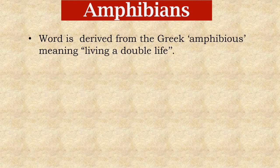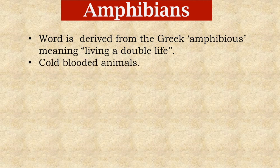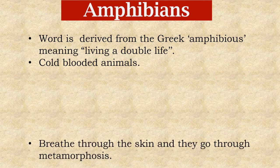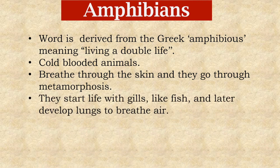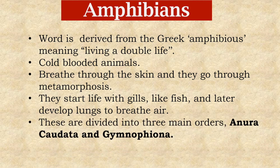The word amphibian is derived from the Greek 'amphibios' meaning 'living a double life.' These vertebrates live on both land and water. These are cold-blooded animals. Amphibians breathe through their skin and go through metamorphosis. They start their life with gills like fish and later develop lungs for breathing. Amphibians are divided into three main orders: Anura, Caudata, and Gymnophiona.